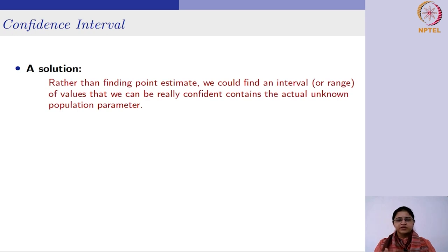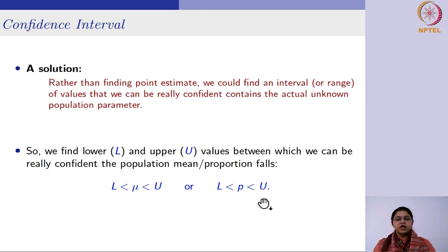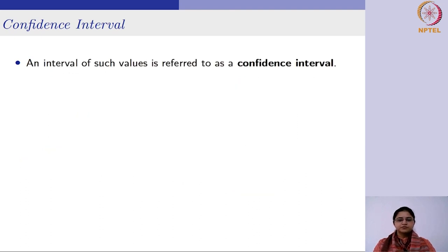We studied point estimates first because interval estimates are built around your point estimate. You first find the point estimate, then subtract and add some quantity to it, and that range is your confidence interval. So if you find the lower and upper values between which you can be really confident that the population mean or proportion falls - that is your confidence interval.